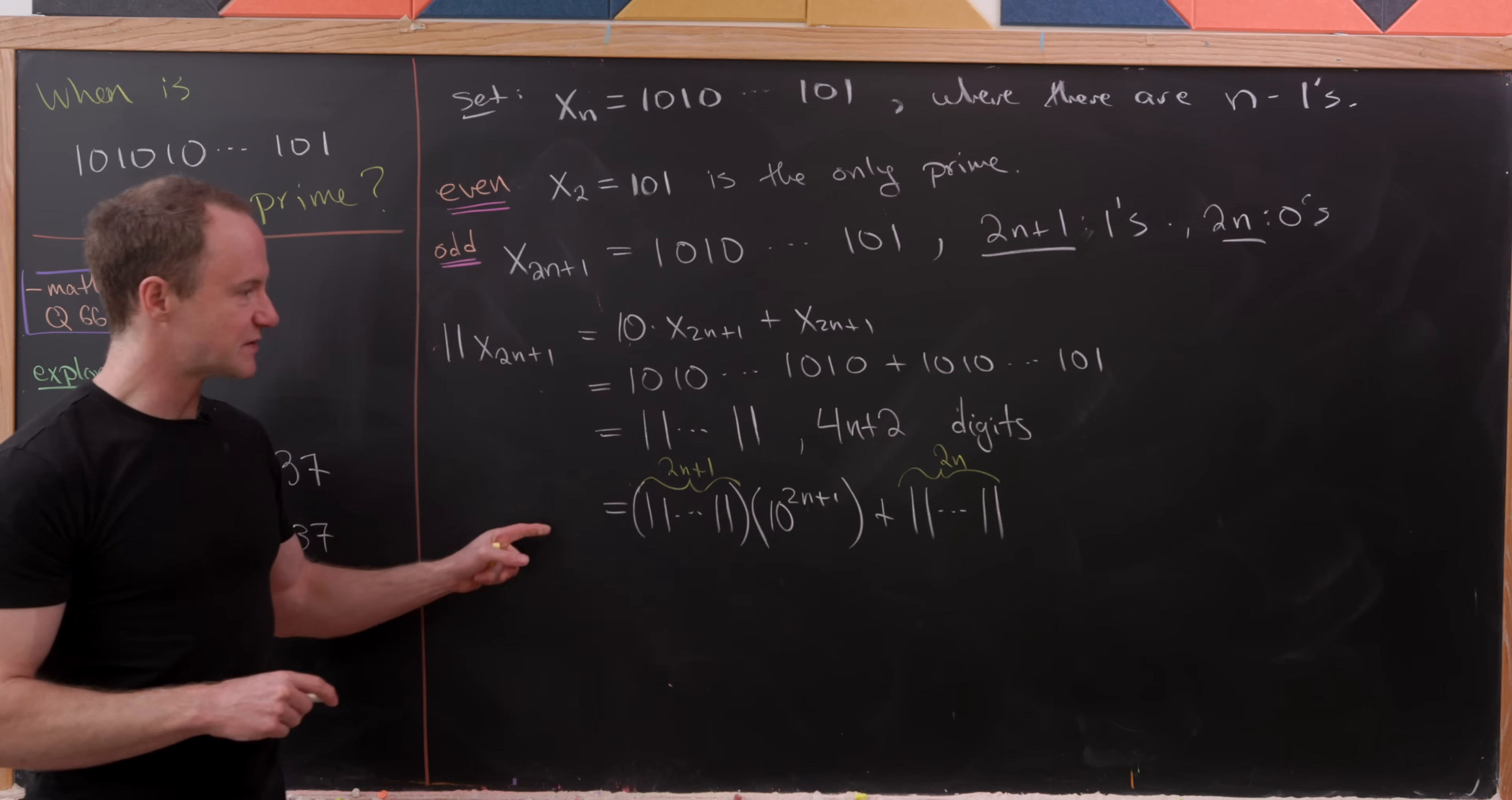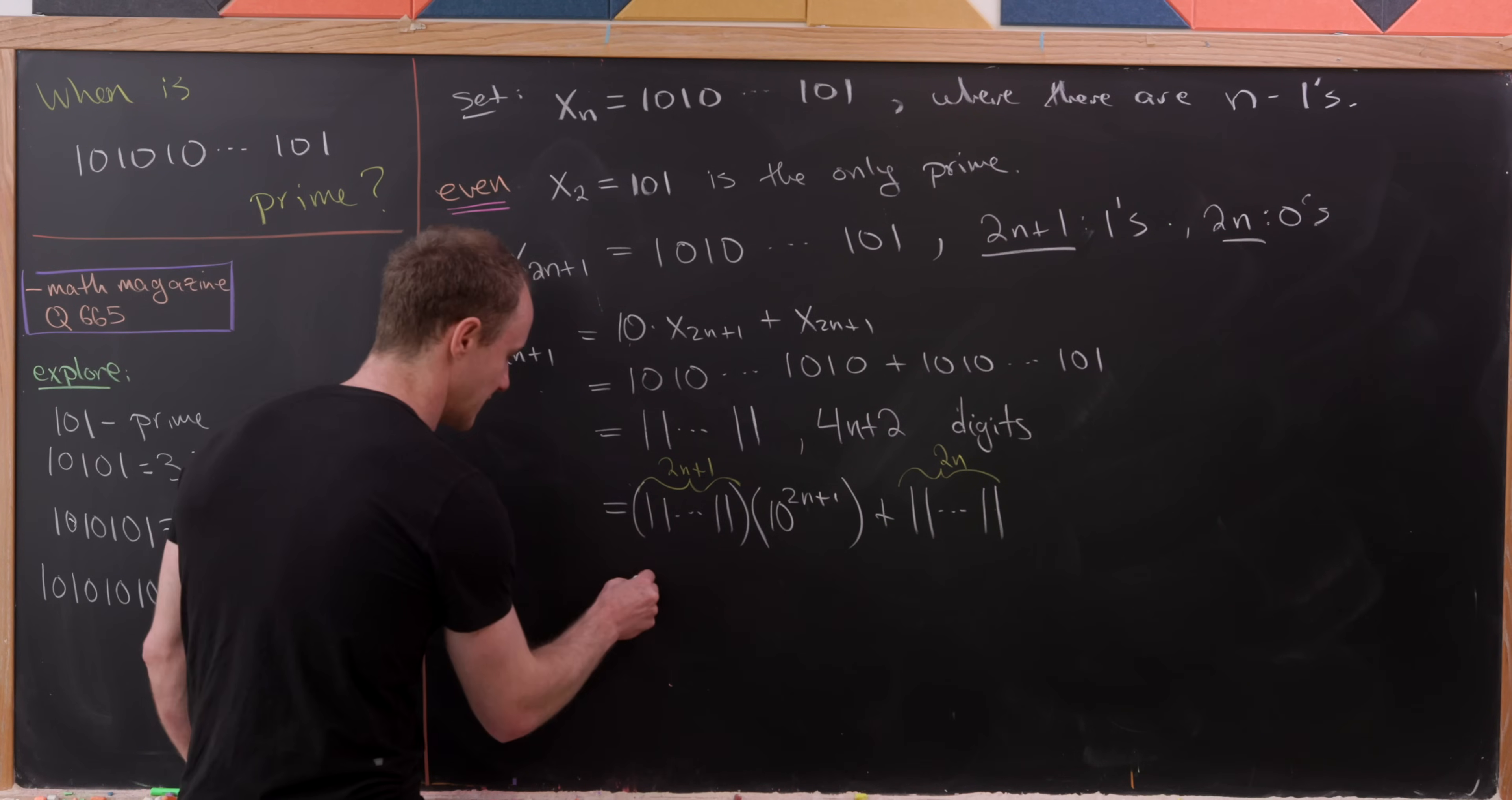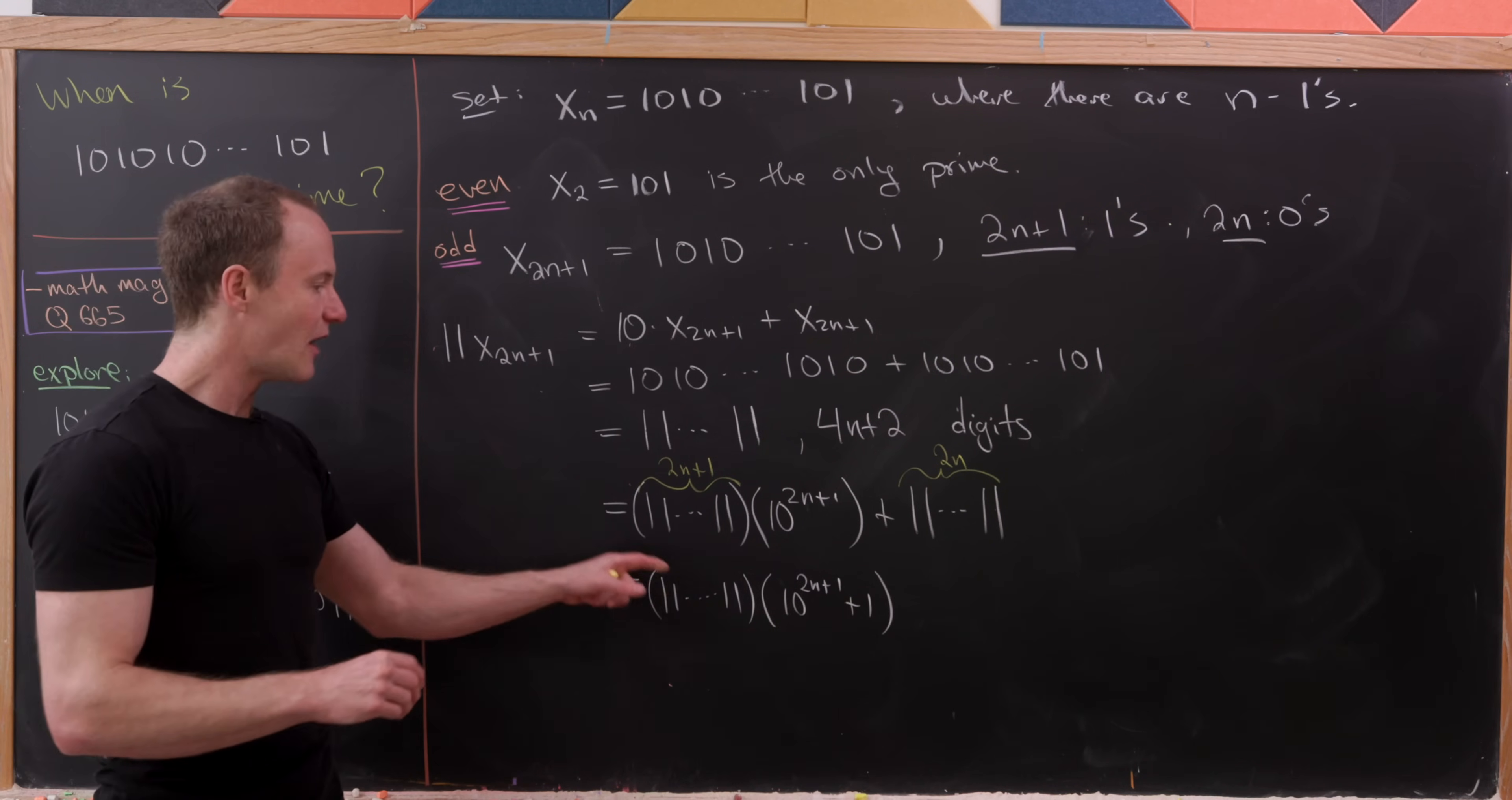But now, let's observe that we're able to factor this 1, 1, 1, 1, and so forth out of the whole thing. And what's that going to leave us with? So, we're going to have 1, 1, and so forth. And then after that, we'll have 10 to the 2n plus 1 plus 1, just by the distributive rule.